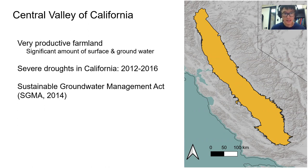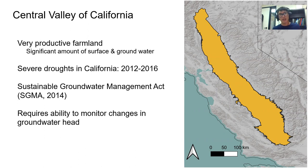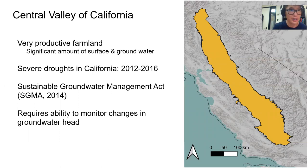The Californian government legislated a Sustainable Groundwater Management Act called SGMA in 2014. By this act, it is required to be equipped with an ability to monitor changes in groundwater head. The focus of today's talk is developing a methodology to monitor groundwater head changes at high spatial and temporal resolution.